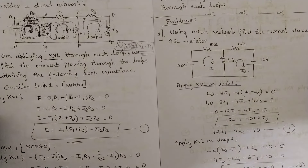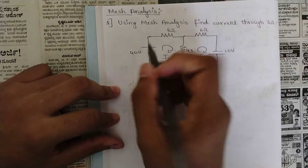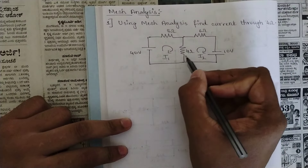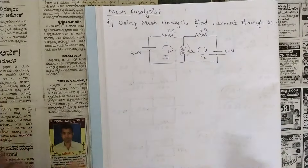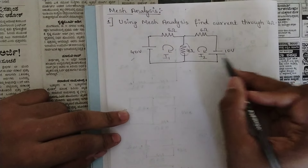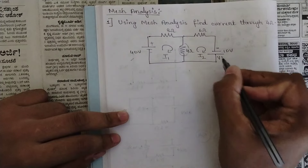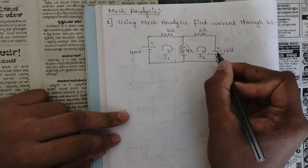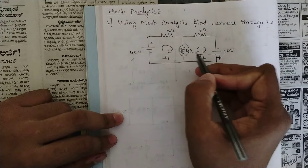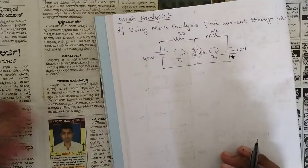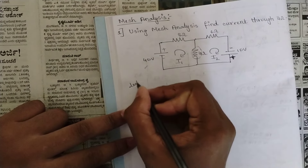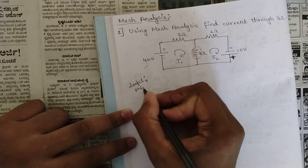So that is the brief description of mesh analysis. Now we have two problems — let's solve them. This is the first question of mesh analysis: using mesh analysis, find the current through the 4 ohm resistor. One voltage source is 40 V, another is 10 V. The first source is plus-minus, the second is minus-plus. This is a circuit with two loops.